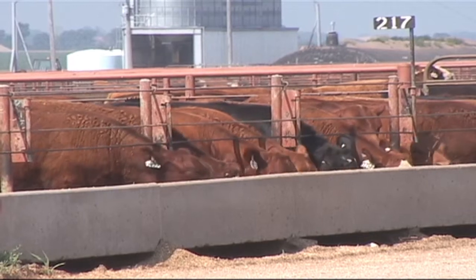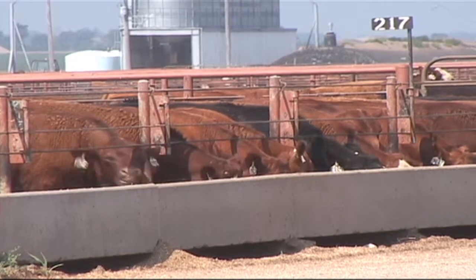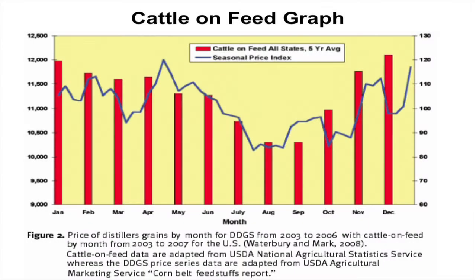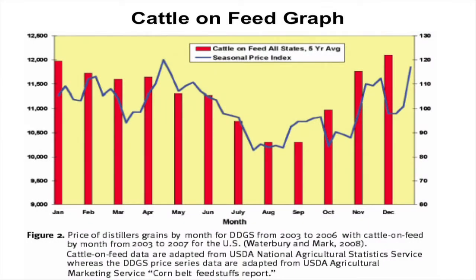Feedlot cattle inventories significantly impact the availability and consequently the price of ethanol co-products throughout the year. As can be seen in the graph, cattle on feed numbers may fluctuate greatly across months, but the trend is for fewer cattle to be on feed during the mid to late summer. As a result, the demand and price of ethanol co-products is usually the lowest during this same time period. This creates an opportunity for seasonal users to purchase the commodity during periods of lower prices and store it for use at a later date.